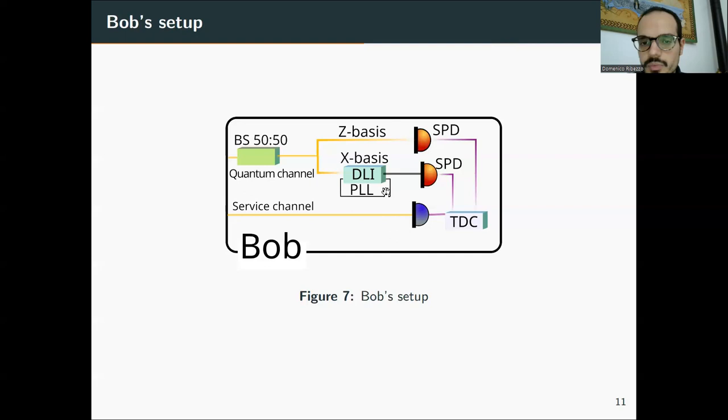Also, there was a phase-lock loop that was necessary for locking interferometer on a certain phase and was made by monitoring data and injecting using a wavelength division multiplexing. And then looking, monitoring the phase fluctuations of this laser, we could control with the PID a phase shifter that kept the interferometer on a certain phase. Finally, the service channel, the synchronization signal was read by detector. And all of these signals are sent into a time-to-digit converter in order to produce the timestamps that then we will use to extract the key.